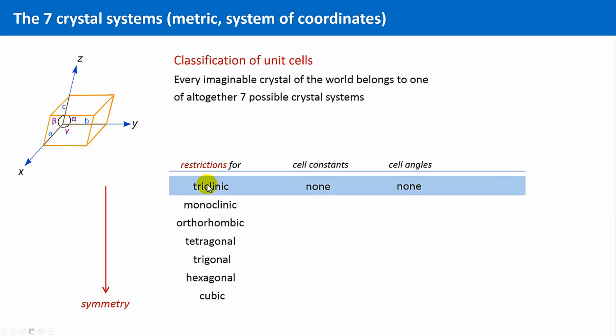In the triclinic crystal system, there are no restrictions concerning the lattice constants, and also no restrictions regarding the angles between the edges or faces.